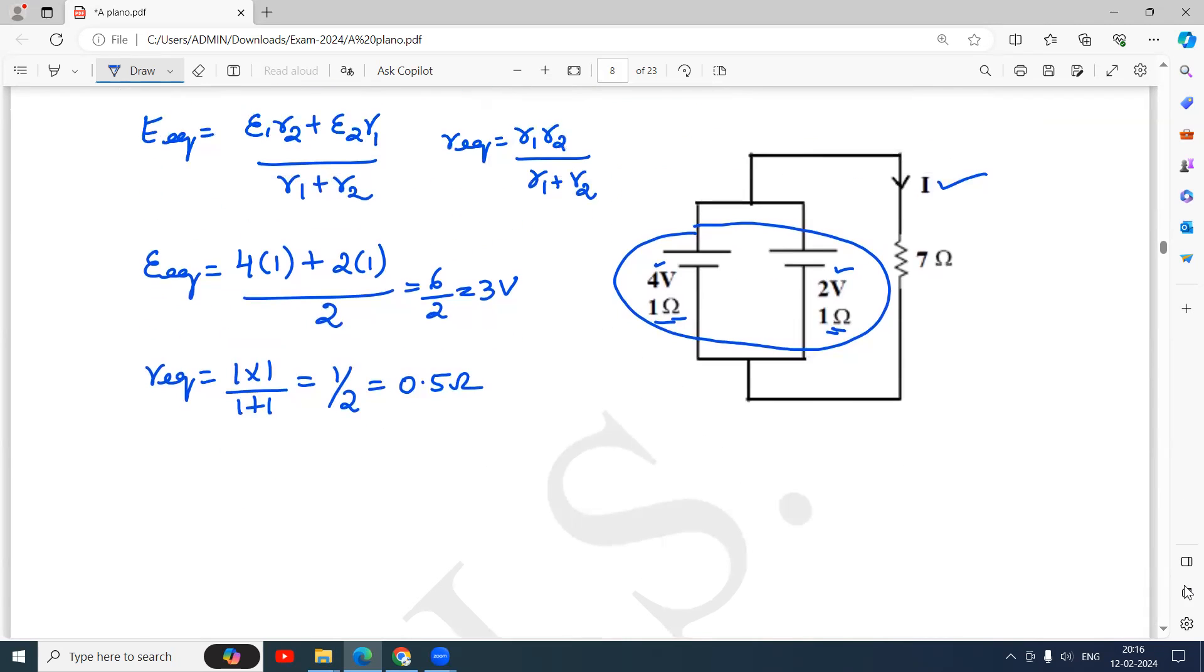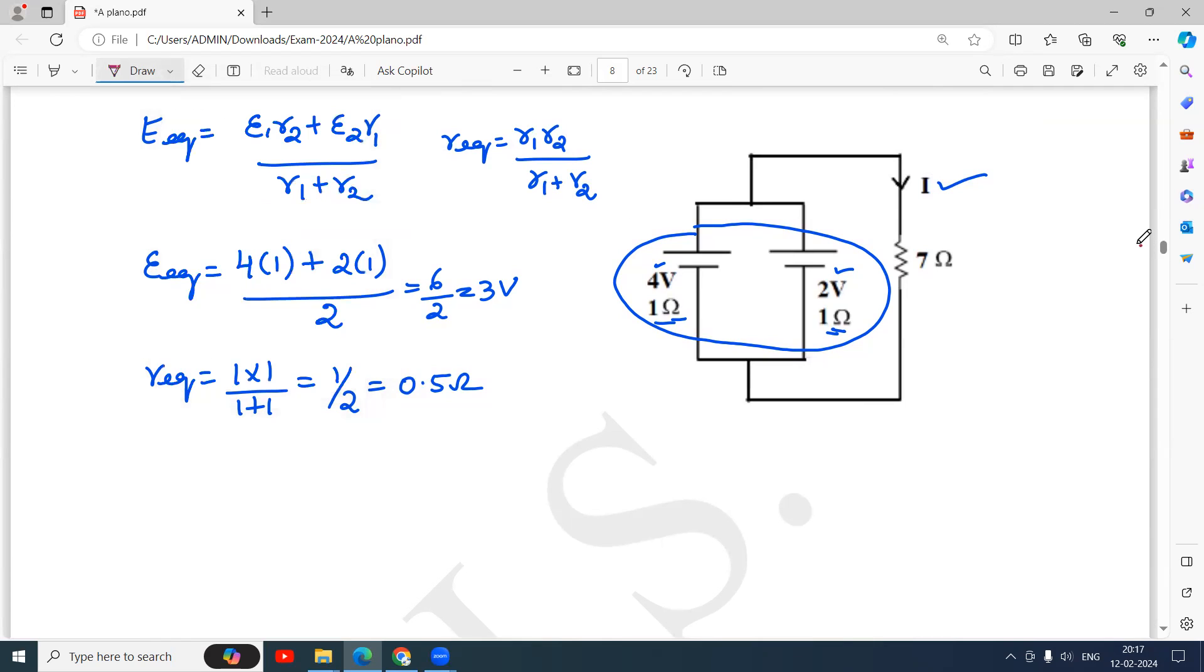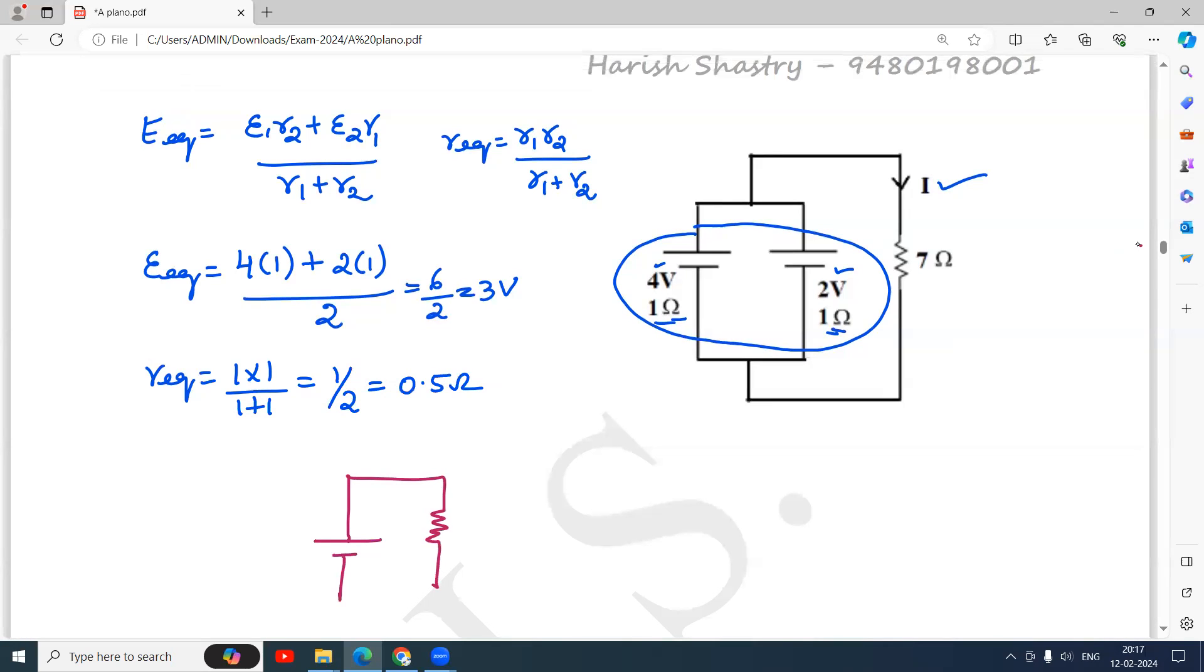So now if you replace this circuit by a simple circuit which contains a single battery and a single resistor, it will be like this: a battery and the resistor like this. This battery is 3 volt, 0.5 ohm. Current will be flowing like this and the resistor is 7 ohm.